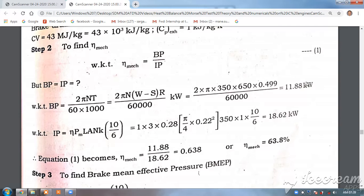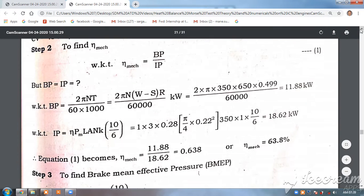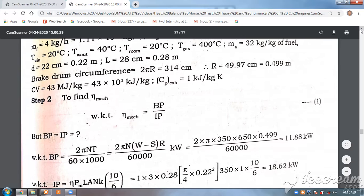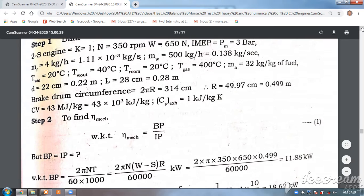Just now we've seen in the brake drum circumference, R = 0.499, that is the value we used, and we have got the brake power as 11.88 kW. This 650 is from the load, 650 newtons is given.